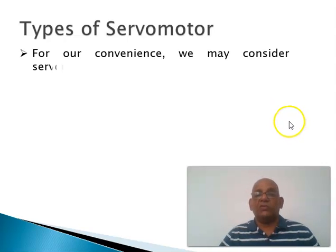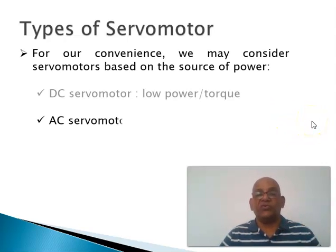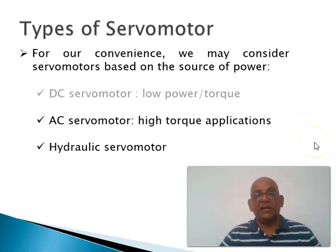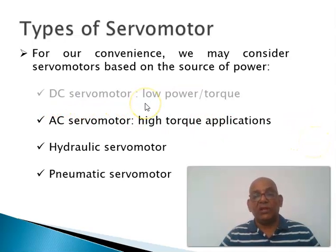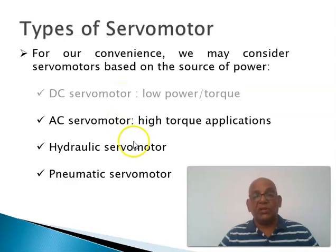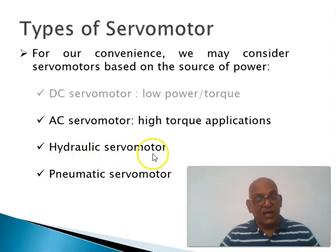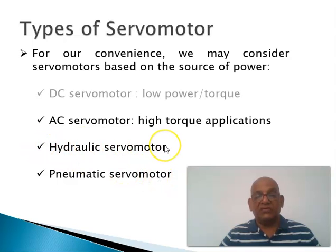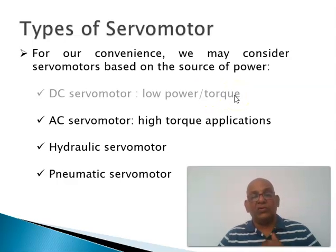We consider servo motors based on their source of power. If the source is direct current, we call it a DC servo motor, and these are capable of relatively low power and low torque applications. For high torque applications we use AC servo motors, and for very high torque applications there are hydraulic and pneumatic servo motors. In our course we will consider only DC servo motors.